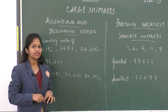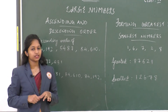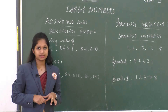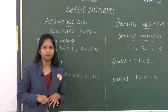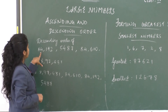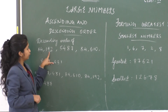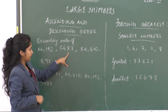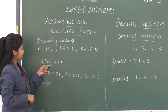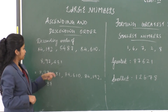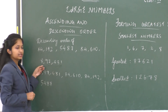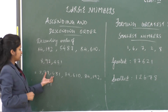You will be familiar with ascending and descending order. Ascending order is the arrangement of numbers from smallest to largest. Descending order is the arrangement from largest to smallest. Here I have four numbers: 84,192 and 84,610 (both five digit), 5,487 (four digit), and 8,97,431 (six digit). The six digit number is the largest, so I write 8,97,431 first.